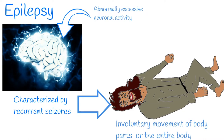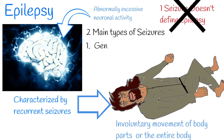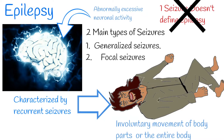Seizures can vary in frequency, from less than one per year to several per day. One seizure does not signify epilepsy — for a diagnosis of epilepsy, two or more unprovoked seizures are needed. The severity and nature of seizures is defined by the location of abnormal activity in the brain and how far this excessive activity spreads.